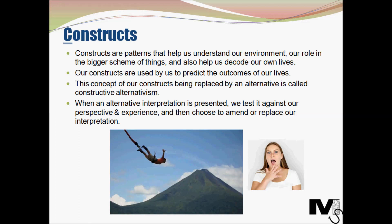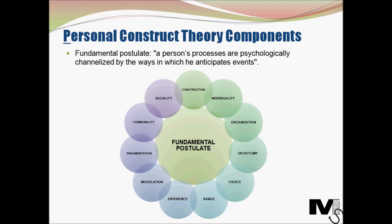Now let's look at the components of the personal construct theory. The personal construct theory begins with a fundamental postulate, or basic principle, and 11 corollaries, or propositions. Kelly's fundamental postulate states that a person's processes are psychologically channelized by the ways in which he anticipates events. This simply means that we build constructs based on how we perceive any event and predict the future with it. This construct is then used by us in the future to verify if that prediction we made was true or not.